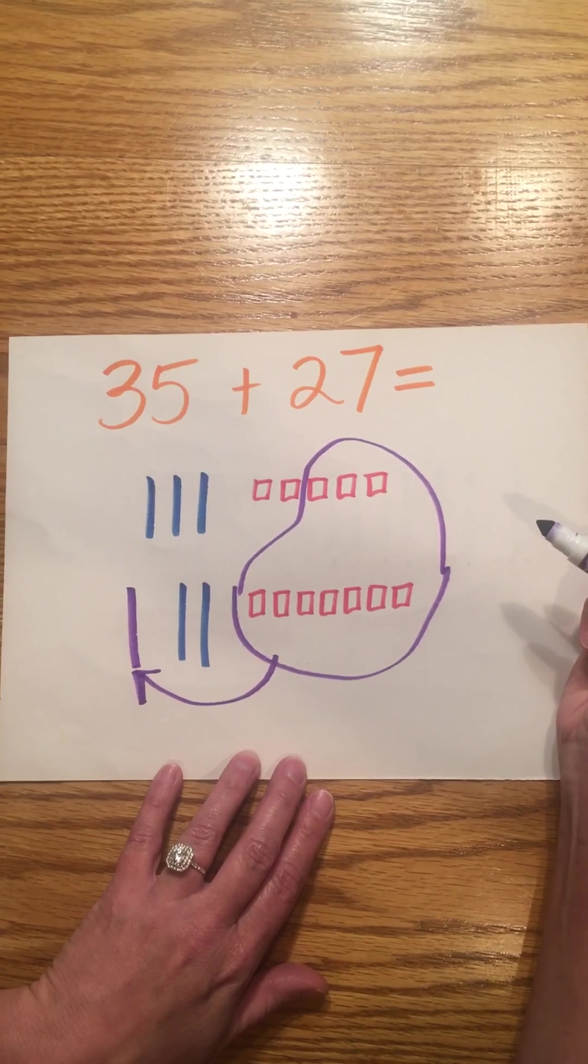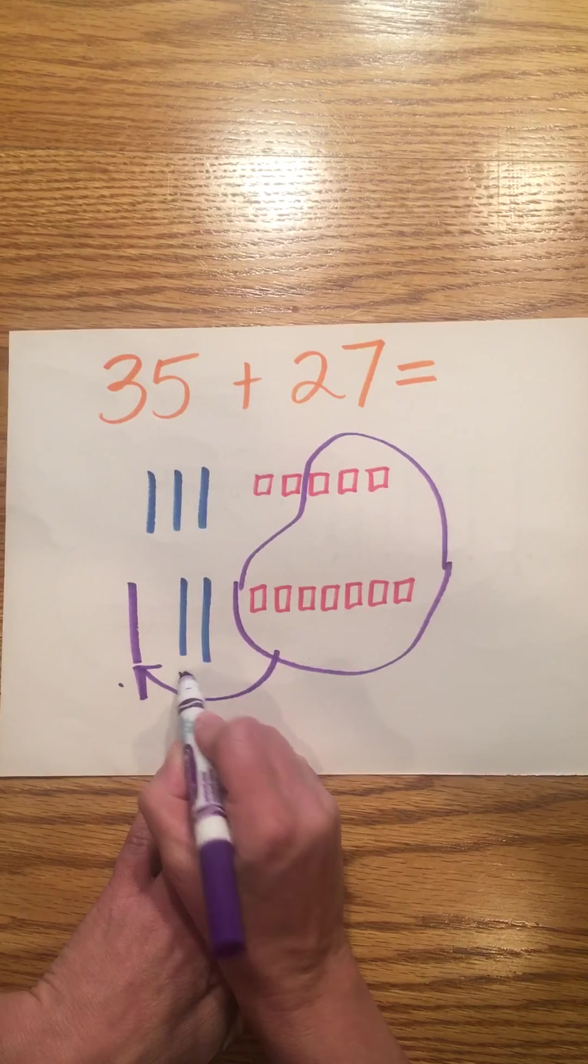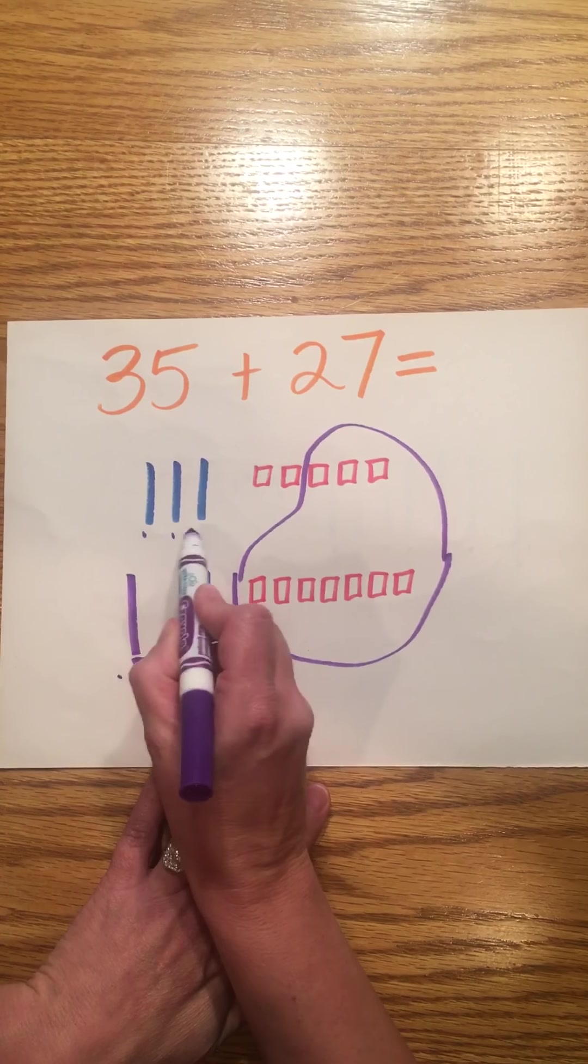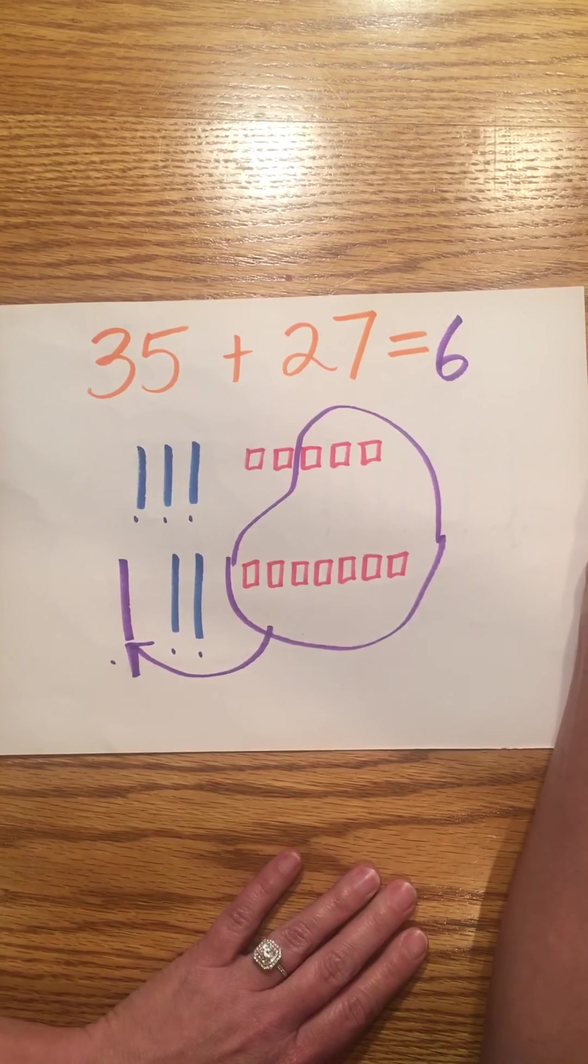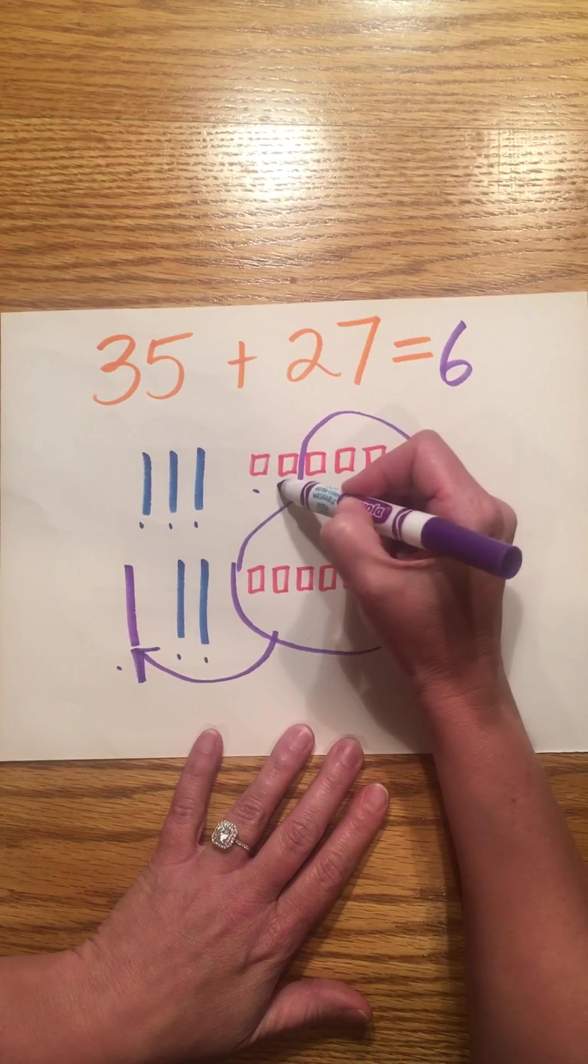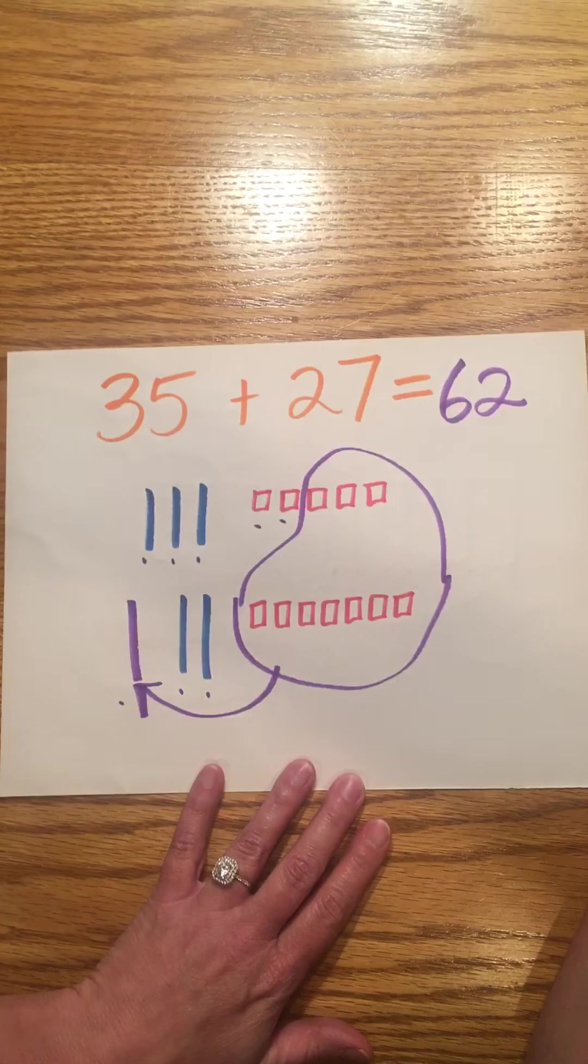Let's count how many tens I have now. One, two, three, four, five, six. I have six tens. I no longer count these ones because I traded them. And I have one, two, two ones left over.